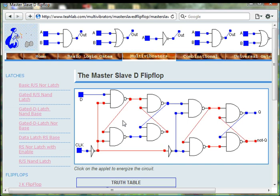Now that we have energized the circuit, let's talk about the circuit's design and operation. The clock input controls access both to the master D latch and to the slave D latch.